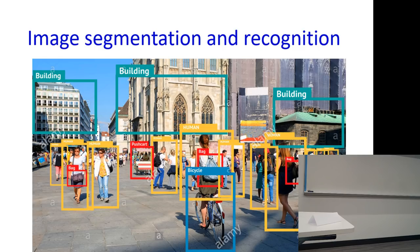Same thing with image segmentation. This picture I picked up from the web, so it must be true — anything that you find on the web is true. This is supposedly an example of a neural network-based system segmenting and classifying objects in a very complicated scene.